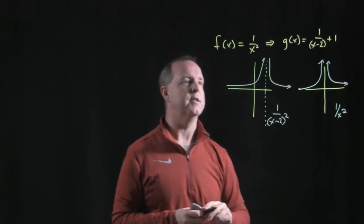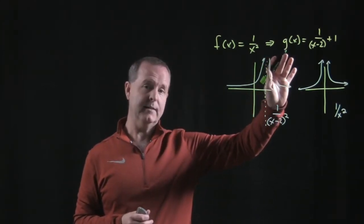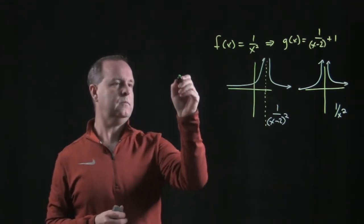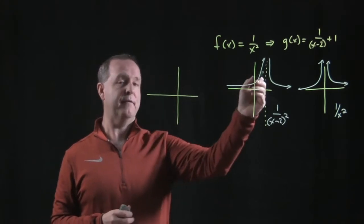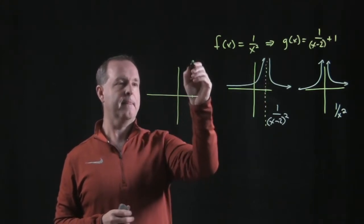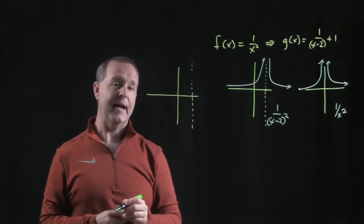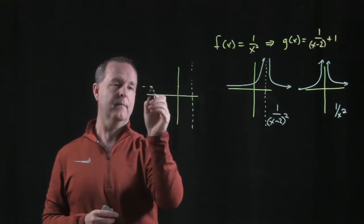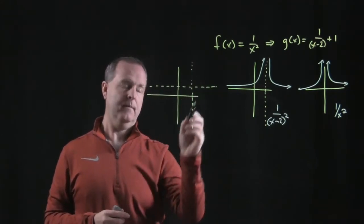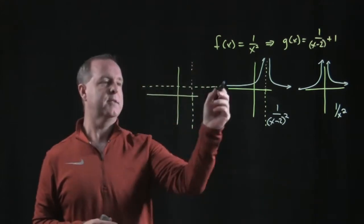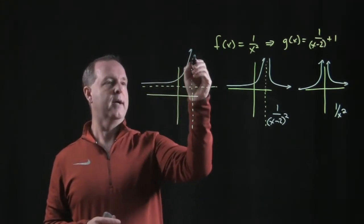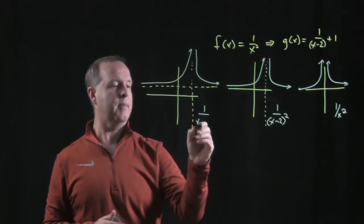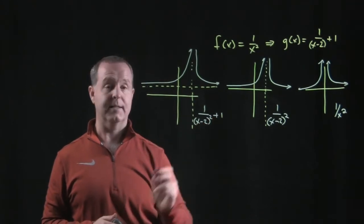And the last transformation that we're going to do is add that 1. Remember what that 1 does? That constant takes the entire graph and shifts it up. So I still have a vertical asymptote at 2. Now I also have a horizontal asymptote, which was originally at 0, but now it's at 1. And then my graph, I'll take that graph and just shift everything on up, 1. And now I have the graph of 1 over x minus 2 squared plus 1.